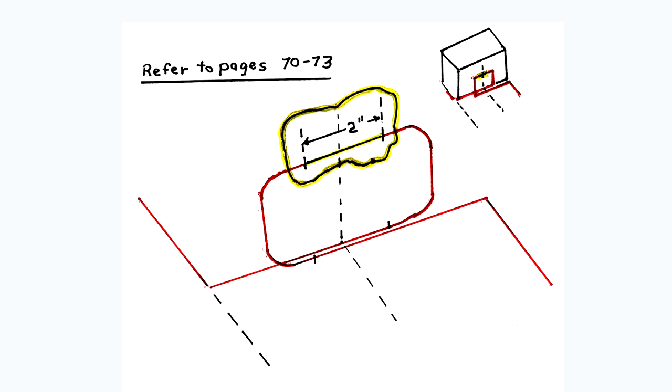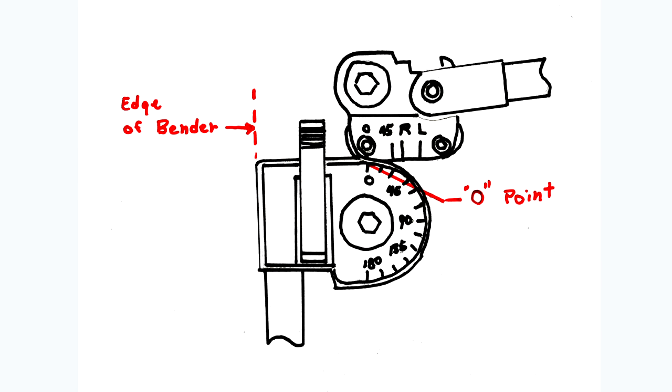For additional vibration loop information, refer to pages 70 to 73 in the book. When laying out any vibration loop, the travel piece between the two 180 degree bends must be long enough to provide room for the physical size of the tube bender.